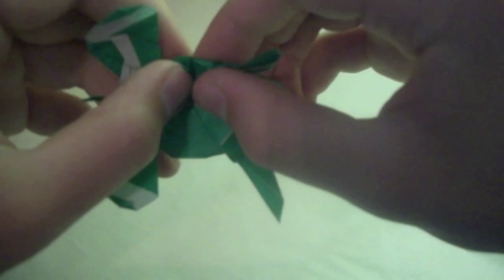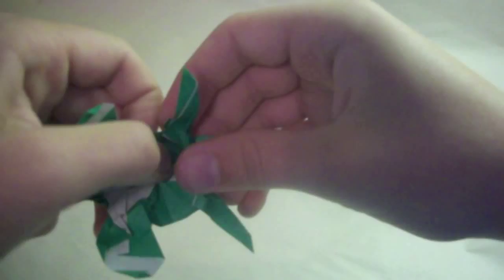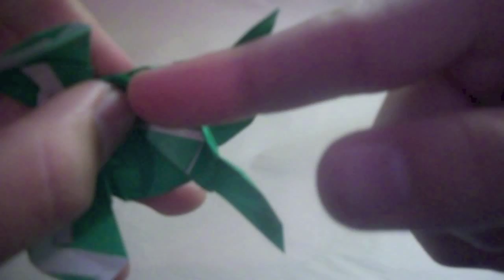And then this paper is a bit too small for me to do it easily, but you can lock it by folding this corner behind. And this one though I'm just going to fold it with a valley fold, which doesn't lock it quite as well. It's too small for me. Then do it on the other side.